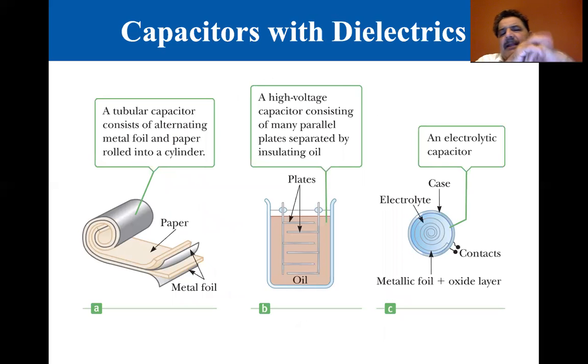This is the way, instead of just parallel plates, usually they have it like this. A tubular capacitor consists of alternating metal foil and paper rolled into a cylinder. The paper of course is a conductor so that the foils won't contact each other. And you get a capacitor that way and it saves space.